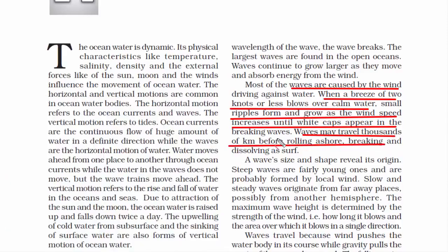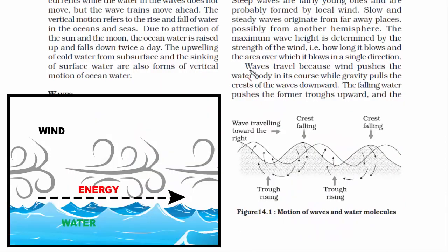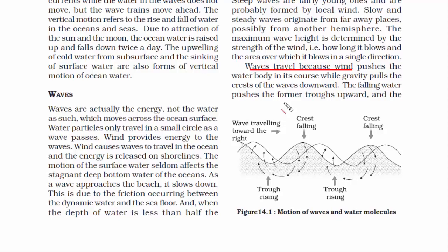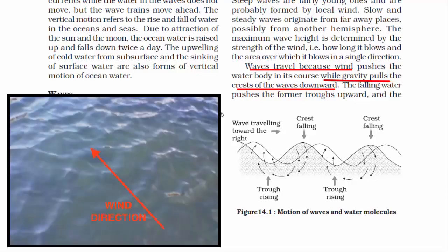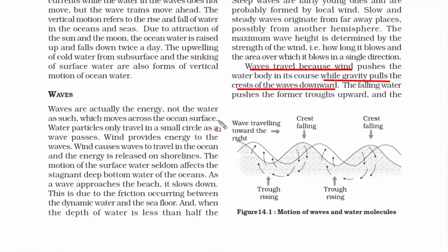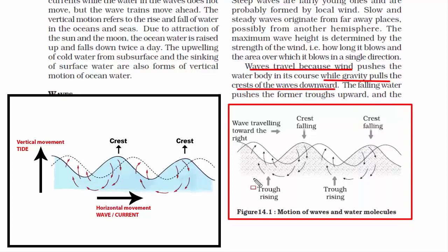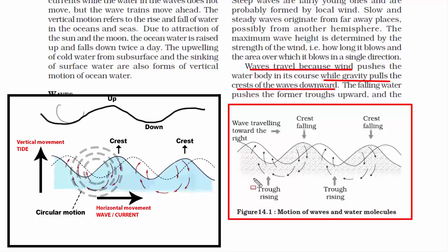Wind pushes the water body — when wind touches the water surface, it creates a wave that can travel thousands of kilometers in the ocean. Gravity also plays an important role; it pulls the water molecules of the ocean downward. When there is friction between wind and the surface water, it creates a natural disturbance, and that's how wave energy is created. The actual motion of the water is circular — the water goes up and down in a circular motion.